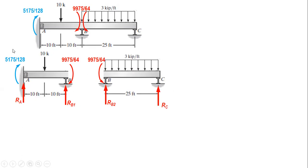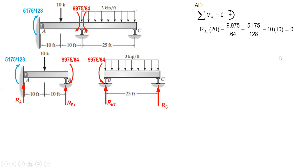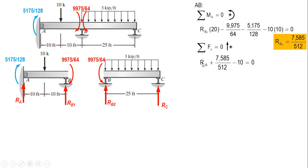Starting with segment A-B: sum up moments about A. The moment at B is clockwise, so minus; the applied load is also clockwise, so minus; and R-B1 is plus. We get R-B1 times 20 minus M-B minus M-A minus the load effect (10 times 10), which gives us R-B1. Then summing vertical forces, R-A plus R-B1 minus 10 equals the result. R-A comes out negative, meaning it acts downward — we assumed upward, so it is actually downward.